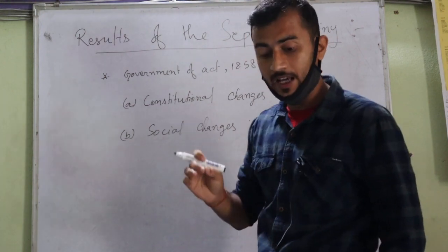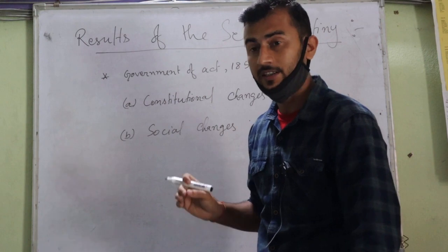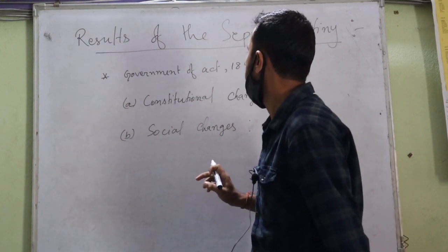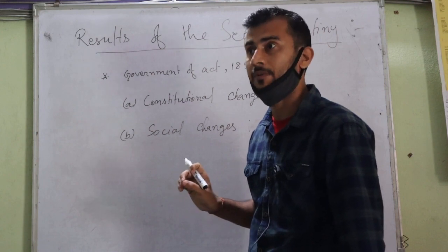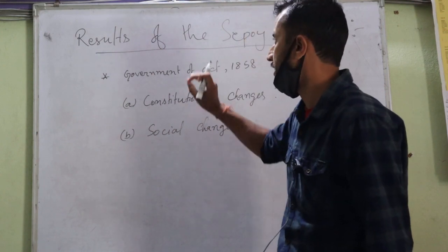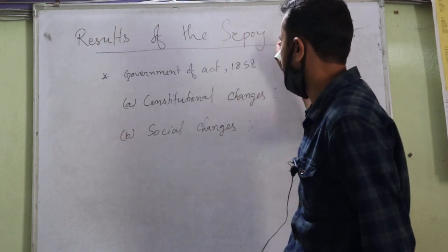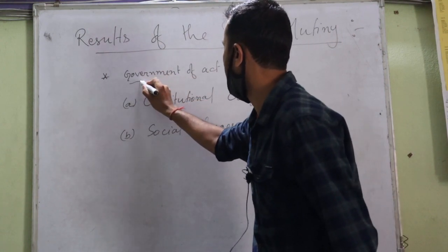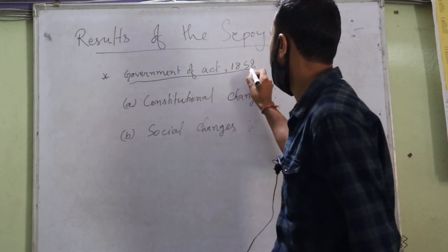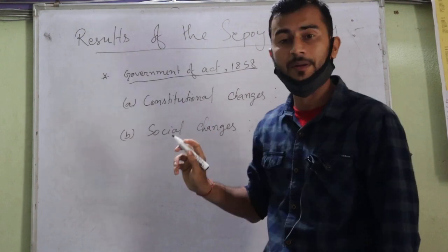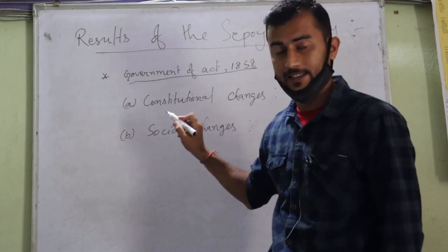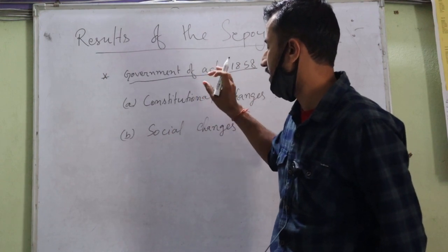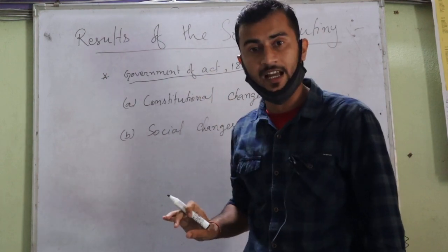The most important result is the Government of India Act 1858. After the 1857 Sepoy Mutiny revolt, the British government enacted an act called the Government of India Act 1858. Through this act, the British government changed various systems in India.